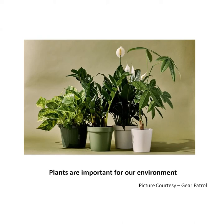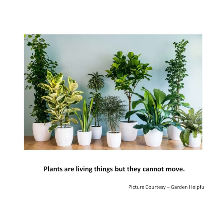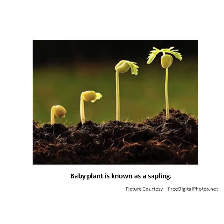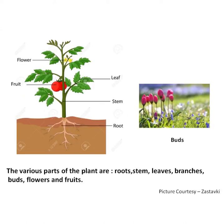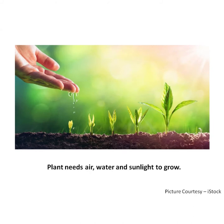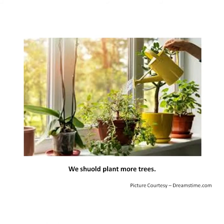Now let's learn conversation sentences on plants. Plants are important for our environment. Plants are living things but they cannot move. A baby plant is known as a sapling. Trees are bigger in size than plants. The various parts of the plant are roots, stem, leaves, branches, buds, flowers and fruits. A plant needs air, water and sunlight to grow. We should plant more trees.